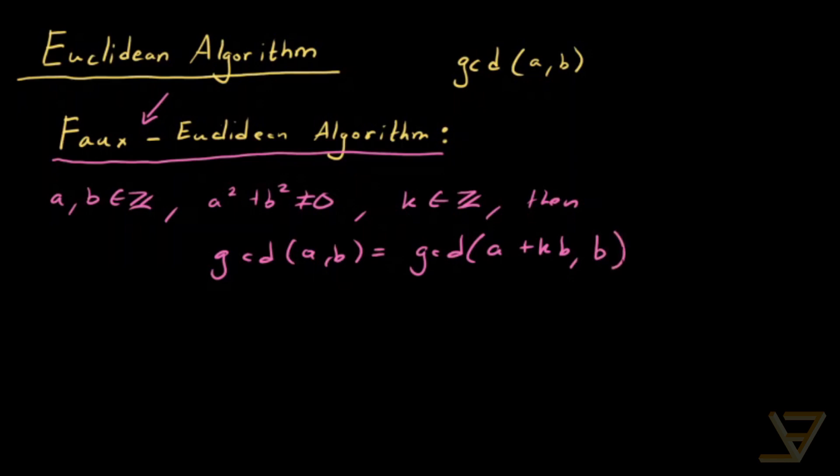So you can add any multiple of b to a and leave b as is and you'll still have the same number, which is the gcd of a and b.